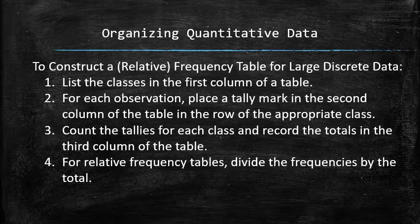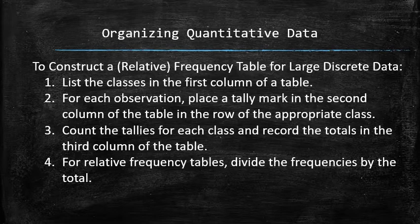In summary, to construct a frequency table for large discrete data, we first list the classes in the first column of the table. Then, for each observation, we place a tally mark in the second column of the table in the row corresponding to the appropriate class. Then we count the tallies for each class and record the totals in the third column of the table. For relative frequency tables, we also compute the relative frequencies in the fourth column.